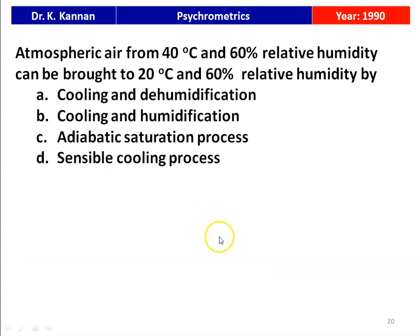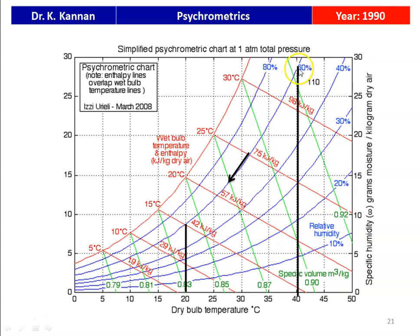The next question is from the 1990 question paper. Atmospheric air at 40°C and 60 percent relative humidity can be brought to 20°C and 60 percent relative humidity by: cooling and dehumidification, cooling and humidification, adiabatic saturation process, or sensible cooling process? The answer is cooling and dehumidification. From the psychrometric chart, traveling along the 60 percent relative humidity line from 40°C to 20°C represents the cooling dehumidification process.